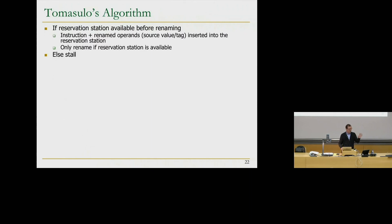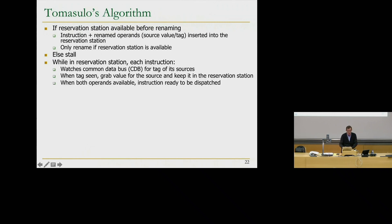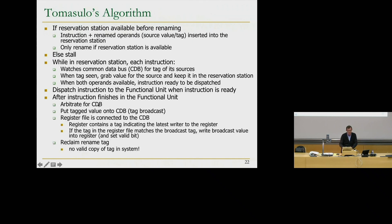Tomasulo's algorithm: whenever we decode an instruction, we check if a reservation station is available. If there's no reservation station available, we stall — that answers the question about what happens when structures are full. If one is available, we insert the instruction and its renamed operands. While in the reservation station, each instruction watches the common data bus to capture a matching tag. When the tag is seen, it grabs the value for that source. When both operands are available, the instruction is ready to dispatch. After finishing in the functional unit, it broadcasts the tag and value. The register alias table is also connected to this common data bus.